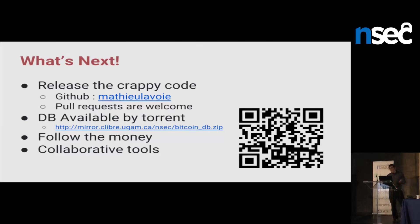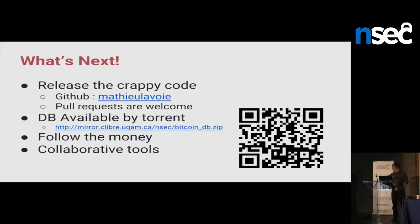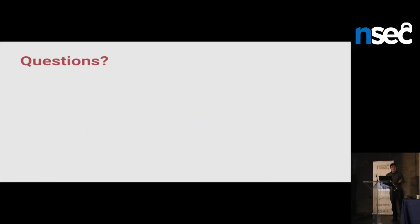Version 3 will be a collaborative tool so people can comment on nodes and say: this node is probably this bad guy, this node is probably this person, this node is probably this system. You'll be able to collectively de-anonymize the Bitcoin network like this. That's it for me — do we have any questions?